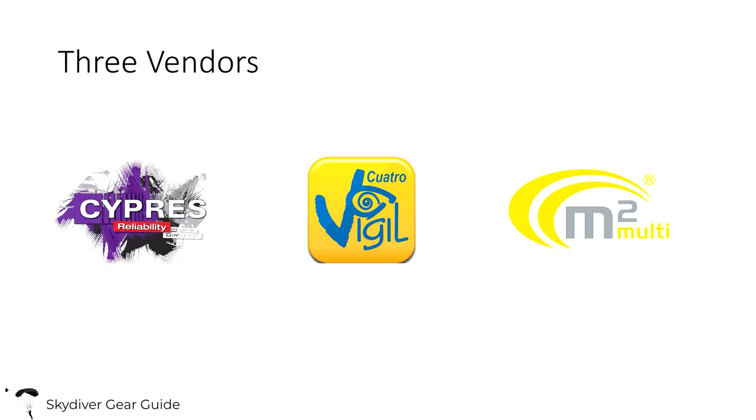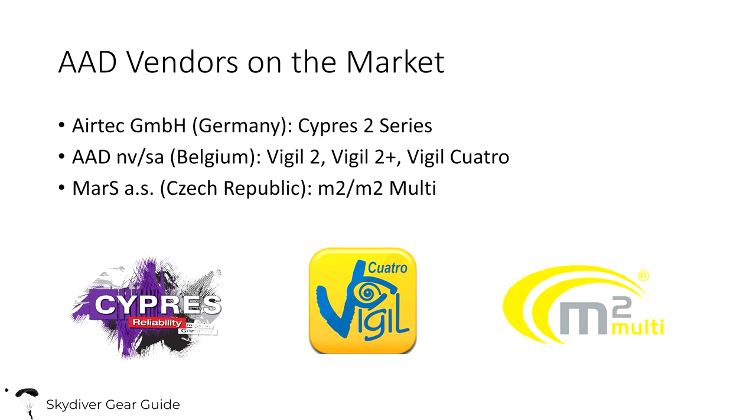There are three manufacturers of AADs for the sports civilian skydiving market. If it's not one of these three, don't jump it. The maker of the Cypress 2 is Airtek GmbH out of Germany. Vigil is made by a company called AAD, based out of Belgium. The M2 is made by a company called Mars, based out of the Czech Republic. They're all European manufacturers and all acceptable as AADs in the United States and virtually every other country.